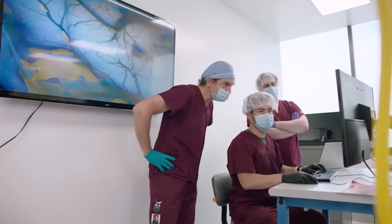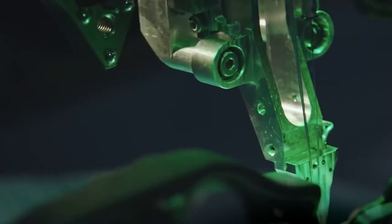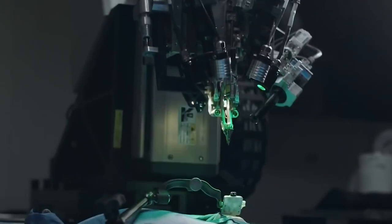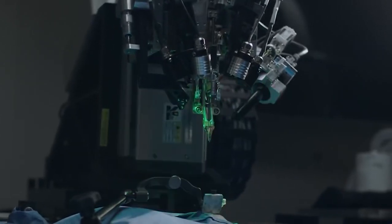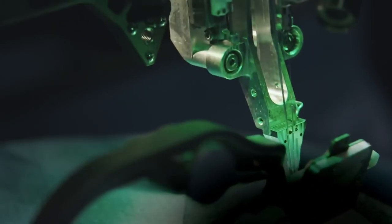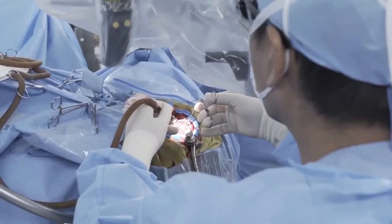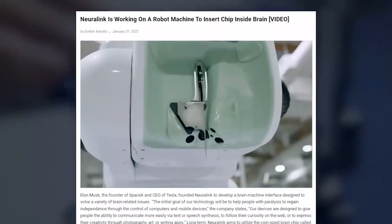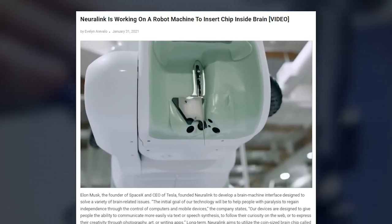To address this, Neuralink has created something new. A sewing machine-like device would be used to implant the probes into the brain. It would utilize a hard needle to push the threads into the cortex's outer layer at a depth of around one millimeter using online motion correction features.